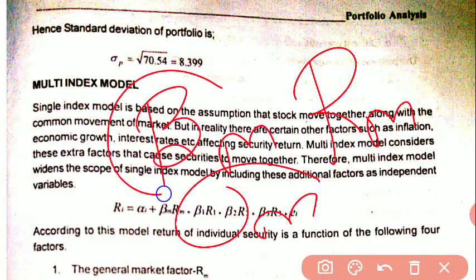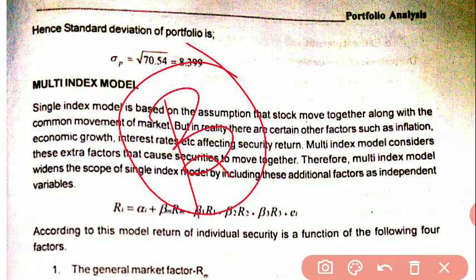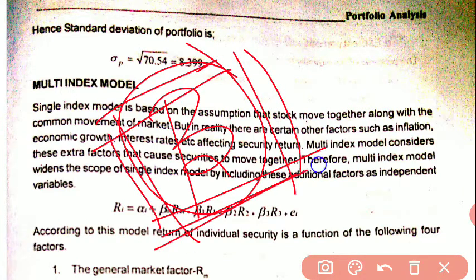Beta is the measurement of systematic risk, or market risk. A lot of risk can be reflected in the market through a single factor beta. That is the single factor analysis, and that is the limitation. What's the limitation?